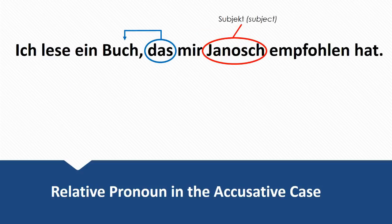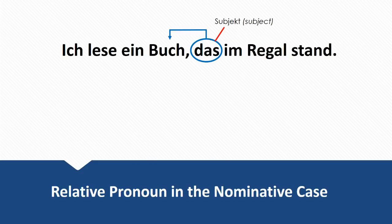Next example: Ich lese ein Buch, das mir Janosch empfohlen hat. Das is the relative pronoun here and it refers back to Buch. Buch is neuter, so we have to use das. Next example: Ich lese ein Buch, das im Regal stand. I'm reading a book that was on the shelf. The book was on the shelf — this is the subject, the active part — so we use das in the nominative case.